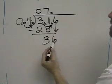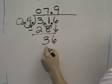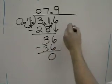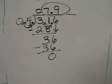4 goes into 36 nine times with nothing left over. That means our final answer is 7.9.